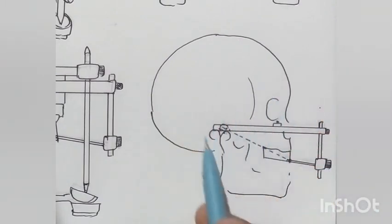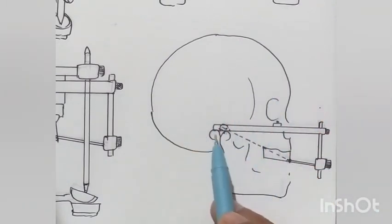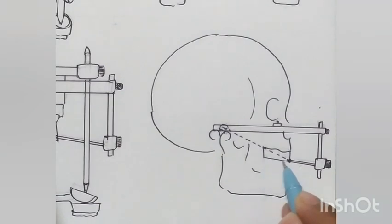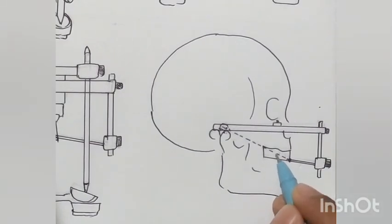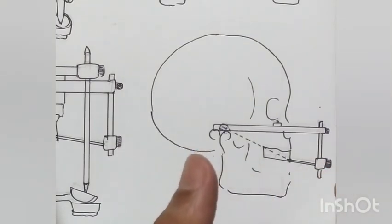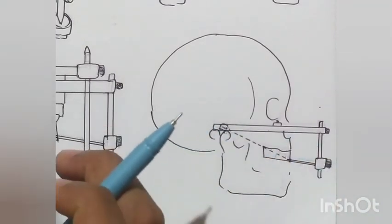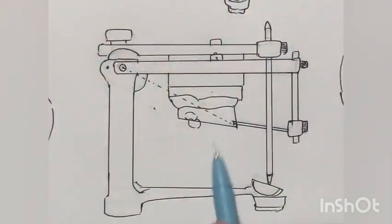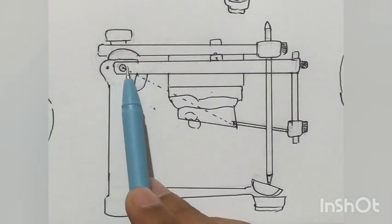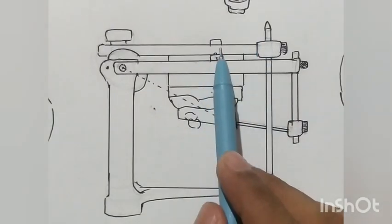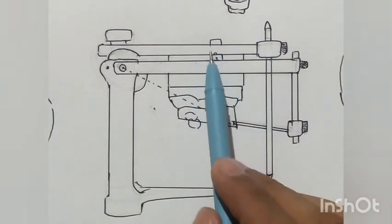Now we have locked the entire assembly, and the position of the condyle relative to the central incisors is recorded and fixed. The angle between the occlusal plane and Bone Will's triangle for this person has been recorded. We can now transfer this record to the articulator — the Hanau articulator — which has the posterior condylar rod, the incisal pin/rod, and the infra-orbital pointer.